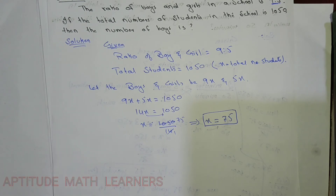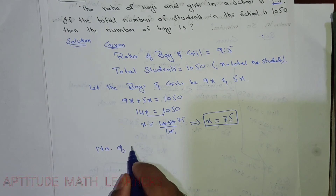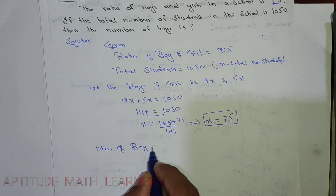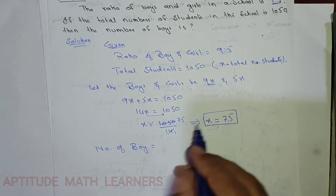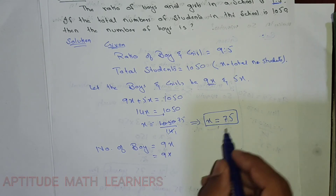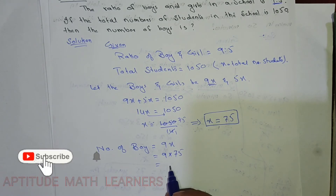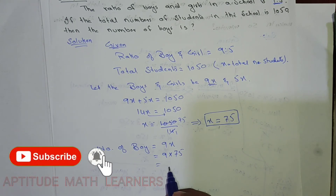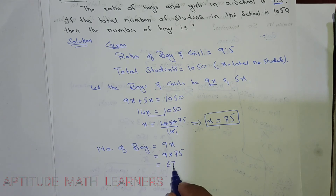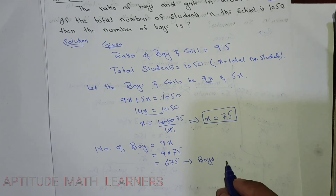Now we know the value of x, so we can find the number of boys and girls. Number of boys equals 9x, and since x is 75, that is 9 multiplied by 75, which gives us 675. So the number of boys is 675.